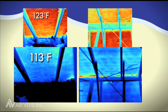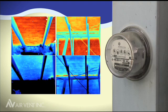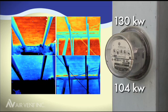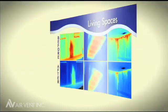Prior to the balanced system, electricity usage was 130 kilowatt hours. After installing the balanced attic ventilation system, the electricity usage dropped to 104 kilowatt hours. This clearly illustrates the benefits of having AirVent's balanced attic ventilation system.